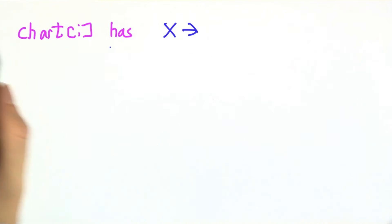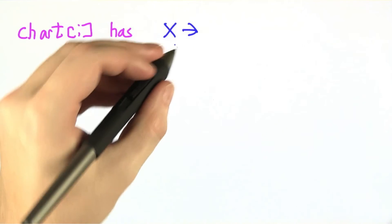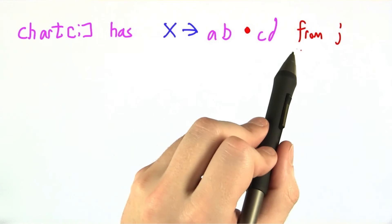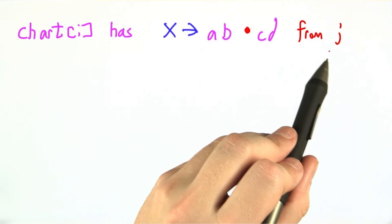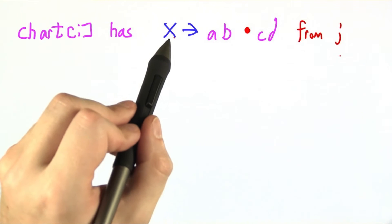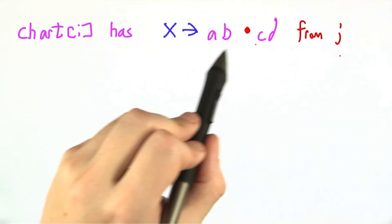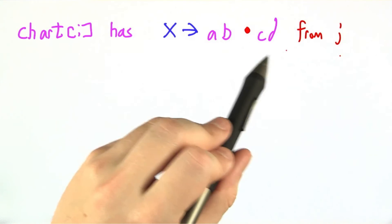So let me make this very generic to handle all possible situations. Let's say that we've got X goes to AB dot CD coming from position J in chart I. Normally for grammars, I always draw non-terminals in blue and terminals in black, but I'm going to leave this A, B, C, and D.